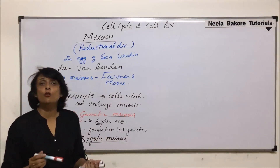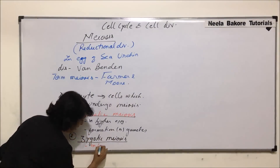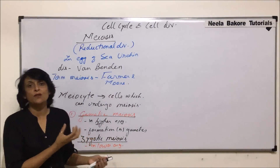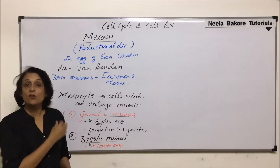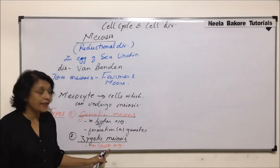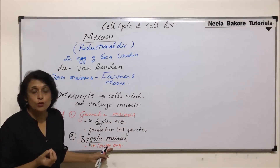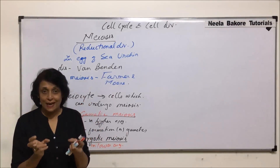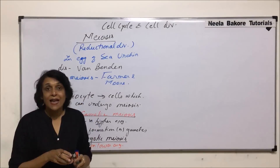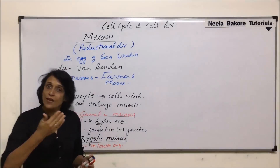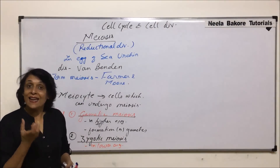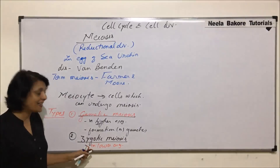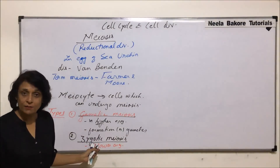Zygotic meiosis is seen in lower organisms, such as simple green algae like Chlamydomonas. These organisms are normally haploid. When they have to reproduce sexually, the two haploid organisms behave like gametes, fuse to form a zygote which is a diploid structure, and the zygote then undergoes meiosis to form haploid cells. These haploid cells again start leading their life as haploid individuals. That kind of meiosis is known as zygotic meiosis.